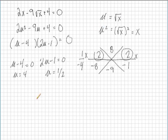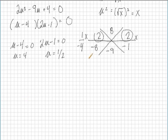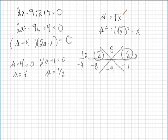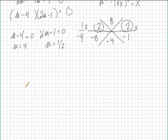but what we want to do is solve in terms of square root of x. So let's just go ahead and put square root of x back anywhere there's a u. So we have square root of x is equal to 4 and square root of x is equal to 1 half.